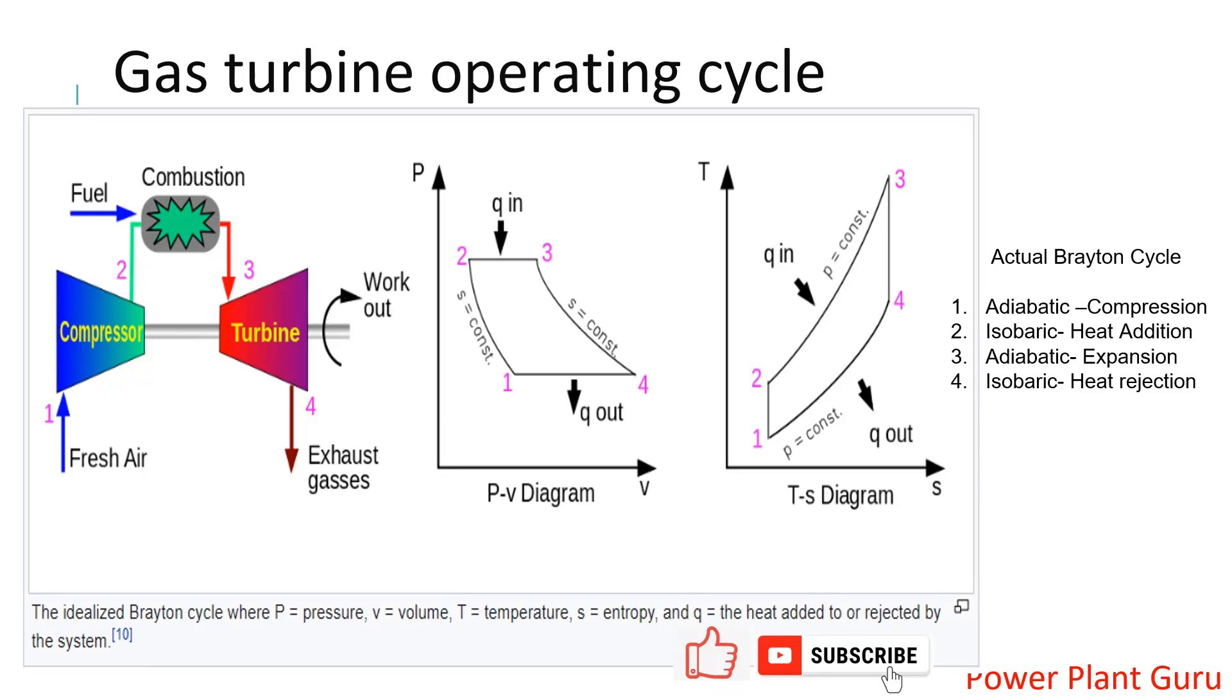Gas turbine operates on a Brayton cycle, which is a constant pressure heat addition cycle. There is a compressor, combustion chamber, and turbine section. We have mentioned like this 1, 2, 3, 4 to describe the individual parts of the cycle.